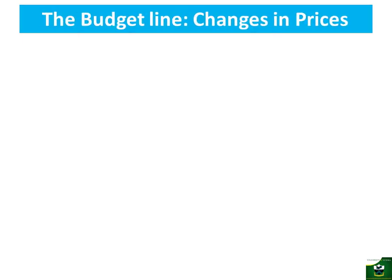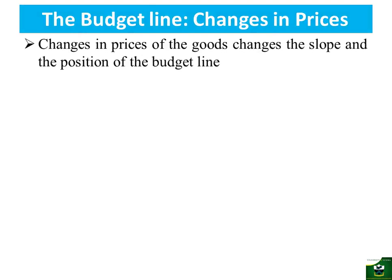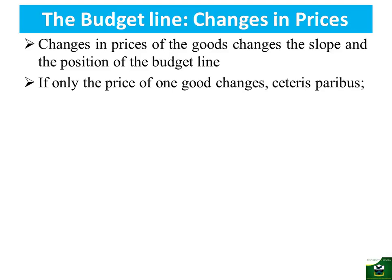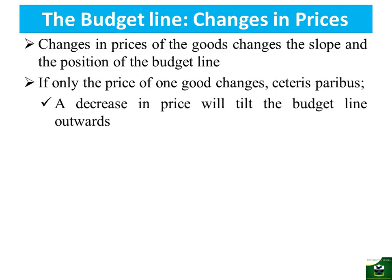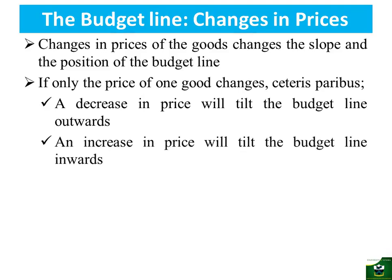Let's look at the changes in price. Changes in prices of the goods change the slope, one of the intercepts, and the position of the budget line. If only the price of one good changes, holding income constant and the price of the other good also constant, a decrease in price will tilt the budget line outward — meaning the consumer now has more purchasing power to buy more goods. And if there is an increase in price, the budget line will tilt inward, indicating a reduction in purchasing power and a shrinking of the affordable bundle.